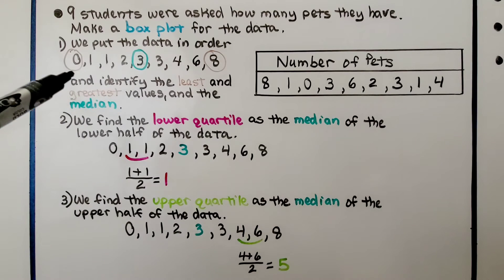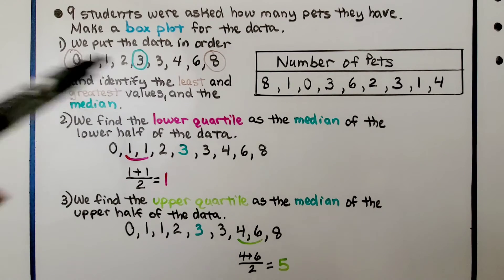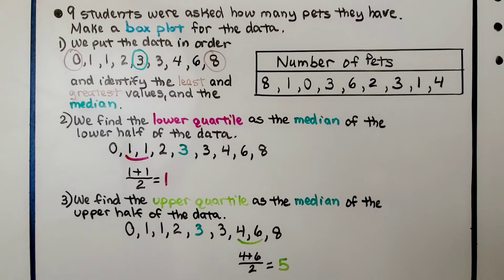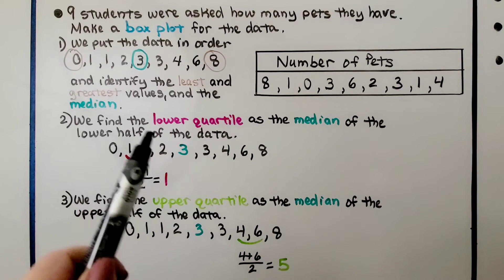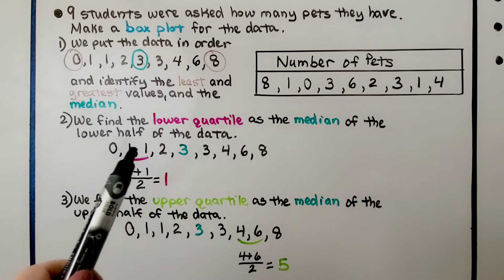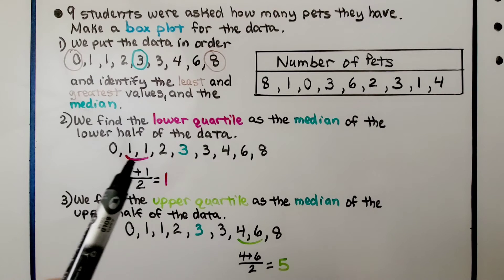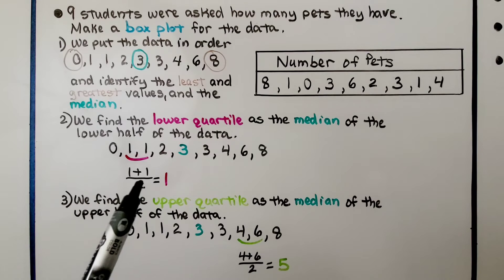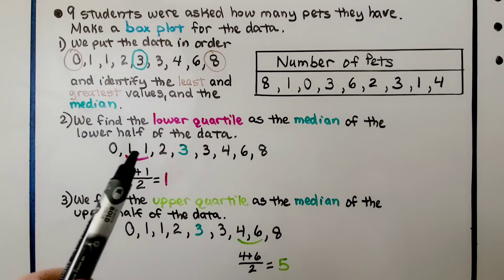The median has 4 values to the left and 4 values to the right — that's the middle number, the median. Now we find the lower quartile, the median of the lower half of the data. We have a 1 and a 1 in the middle of the lower half, so we do 1 plus 1 equals 2, divide by 2, and the lower quartile is 1.